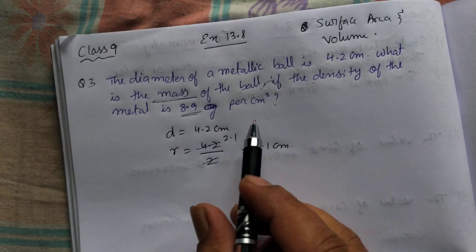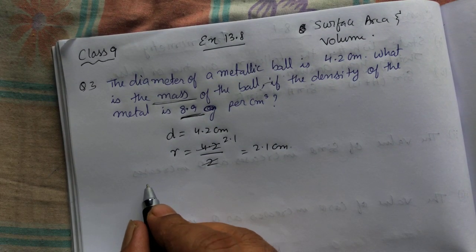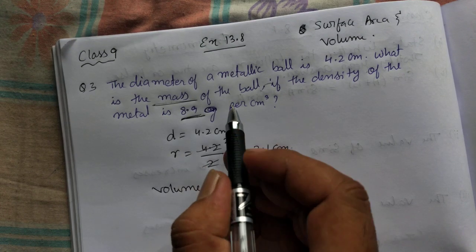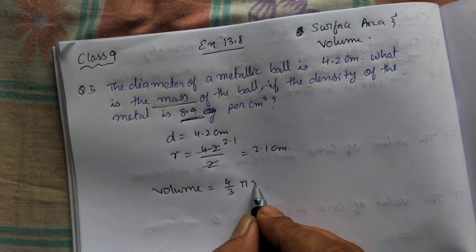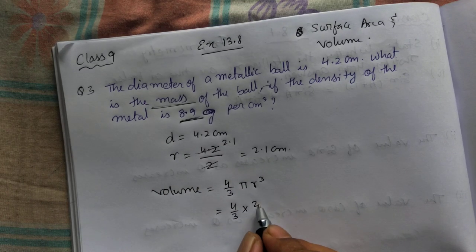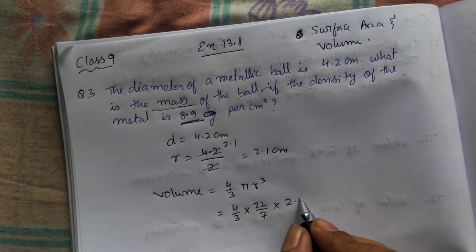Once we get the radius, to find the mass you need to find the volume. So volume of metallic ball is 4 by 3 pi r cube. 4 by 3 into pi is 22 by 7 into r is 2.1.